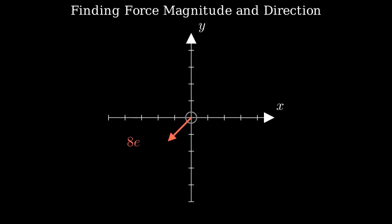An 8 kN force acts at 45 degrees below the x-axis, and we have an unknown force t at an unknown angle theta.